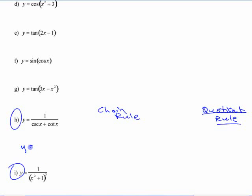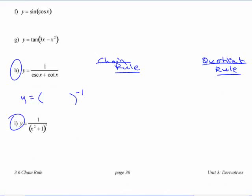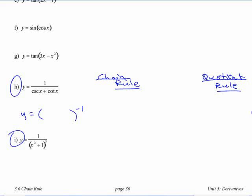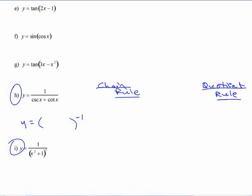If you write it as, I mean, if you write this as something to the power of negative 1, then you can use the chain rule. If you leave it as is, you probably need to use the quotient rule where the top function is 1. All right, take some time to do that. Just remember that the answers are at the back of that section. Okay, you go to the end of that section. There's answers there for those questions.